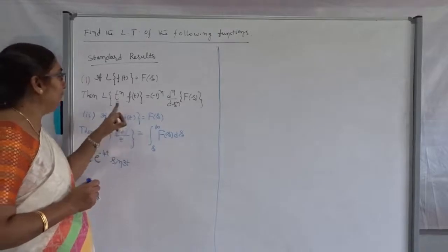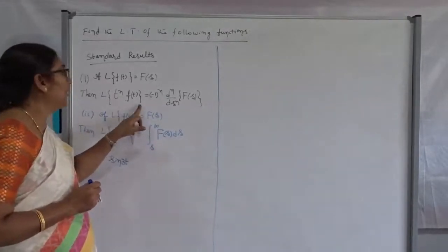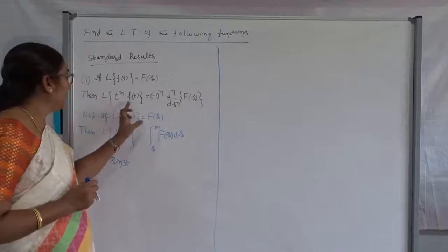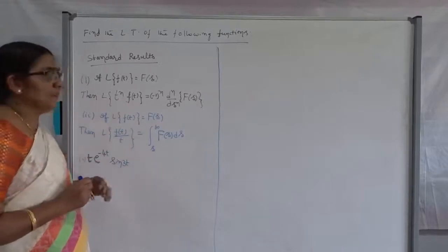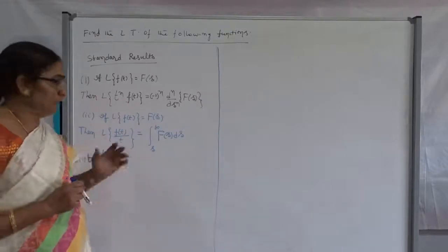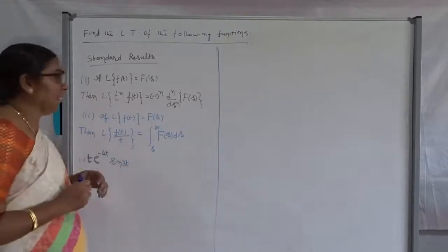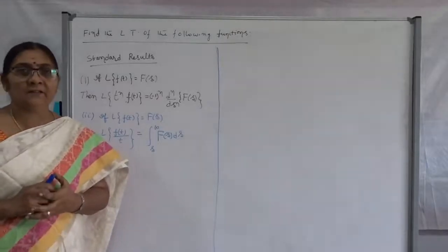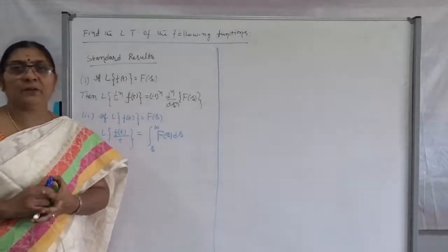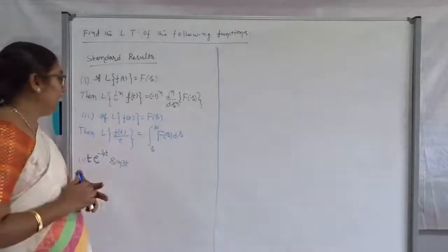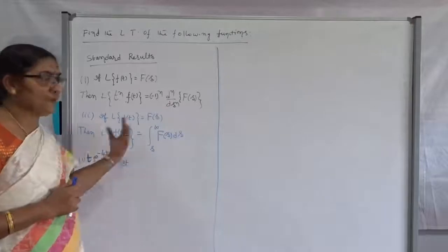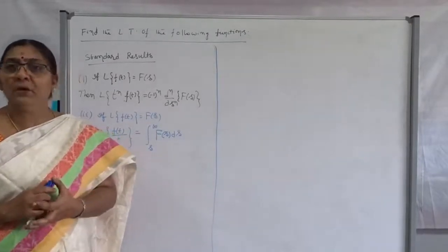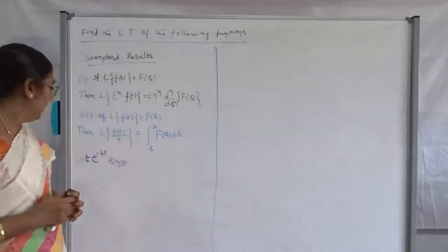The first result is very useful whenever we have a product with t. The second result is very useful whenever the denominator contains t. Maximum cases, we take just t. t-squared is also possible but it is very tedious — we have to integrate twice from s to infinity.